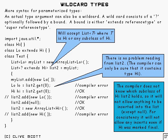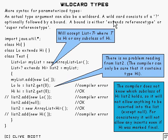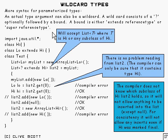Wildcard types address this issue to at least some extent. What they are is a type of syntax that is added into parameterised types. You can have an actual type argument as a wildcard. A wildcard is a question mark optionally followed by a bound, and a bound is either of the form 'extends some reference type' or 'super some reference type'.